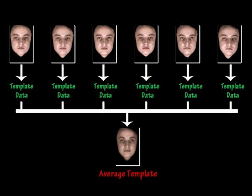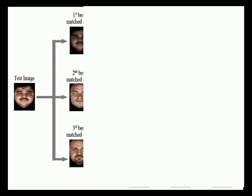During testing we apply the same to the given input image. Now we correlate this with the average template of each subject and pick up the three best matches: first best match, second best match, and third best match.